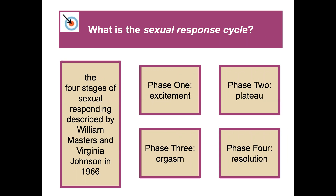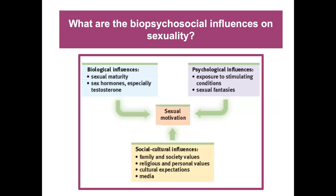The four stages of the sexual response cycle were described by William Masters and Virginia Johnson in 1966. They are commonly referred to as: Phase 1 — Excitement, Phase 2 — Plateau, Phase 3 — Orgasm, and Phase 4 — Resolution.